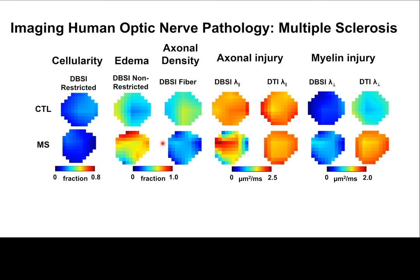Here is a DPSI result from one example in multiple sclerosis. We can see that cellularity does not really increase in this MS patient — it may even decrease. Looking at edema, you do see the optic nerve having a significant amount of edema. Axonal density is decreased, suggesting axonal loss. For axonal injury, DPSI can show it whereas DTI does not. In this particular case, the peripheral region appears decreased and the inside appears increased, so on average it may not change — this needs further investigation.